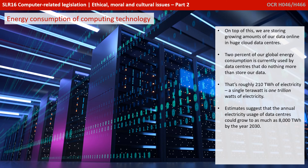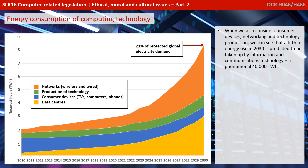A single terawatt is one trillion watts. Estimates suggest that the annual electricity usage of data centres could grow to as much as 8,000 terawatts by the year 2030. When we also consider consumer devices, networking and technology production, a fifth of energy used in 2023 is predicted to be taken up by information and communications technology — that's a phenomenal 40,000 terawatts of electricity.